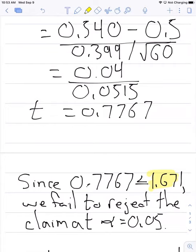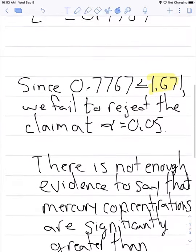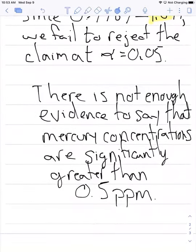So what does that mean in real terms? We can write out that there is not enough evidence to say that mercury concentrations are significantly greater than 0.5 parts per million.